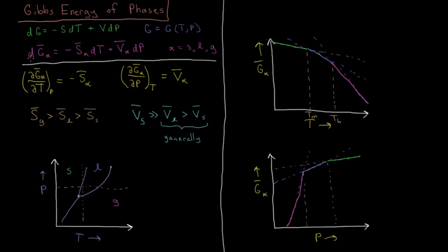We can see directly from the Gibbs energy and its derivative form how the Gibbs energy varies for each phase as a function of temperature and pressure, and that directly relates to the molar volumes and molar entropies of each phase. This shows how individual phases become different equilibrium phases at different points in the pressure-temperature diagram. If we had moved to lower temperatures during the pressure scan, we would have skipped the liquid entirely — there was never a point where it had the lowest Gibbs energy. It's simply a matter of which phase has the lowest Gibbs energy at any point in the phase diagram.